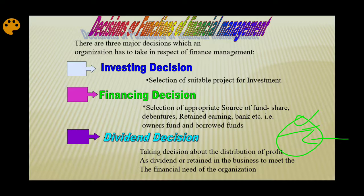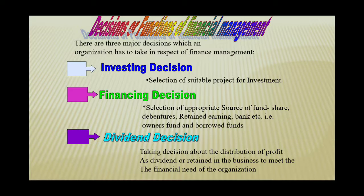So these are the three major functions of financial management, or we can say these are the major decisions of financial management which a business finance manager has to take from time to time for the better utilization of finance in the business.